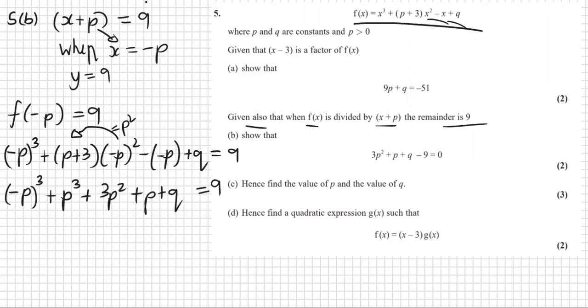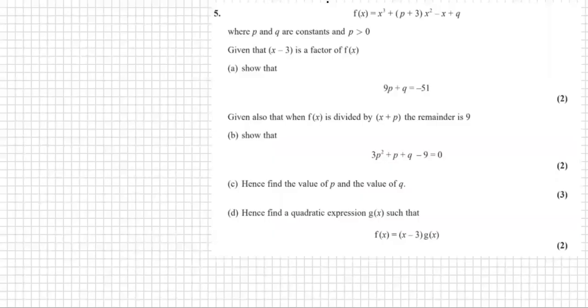Negative P to the power of 3 is negative P to the power of 3 because minus P times minus P times minus P makes minus P. So these two cancel out. Negative P to the power of 3 plus P to the power of 3. Then we're left with 3P squared plus P plus Q. And let's bring the 9 to the left because that's how it is in the required answer. Minusing 9 on both sides. There we are.